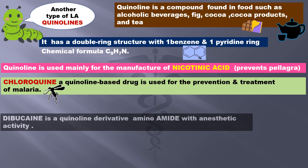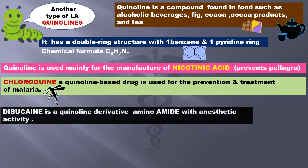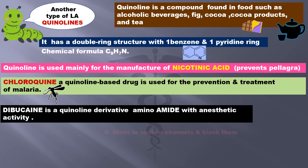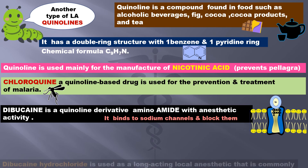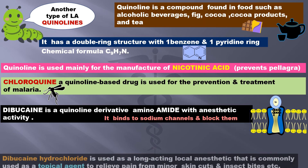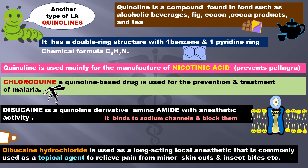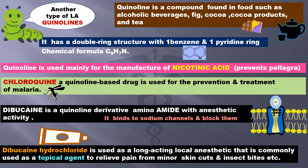Dibucaine is a quinoline derivative aminoamide with anesthetic activity. It binds to sodium channels and blocks them. Dibucaine in hydrochloride form is used as a long-acting local anesthetic that is commonly used as a topical agent to relieve pain from minor skin cuts, insect bites, etc.